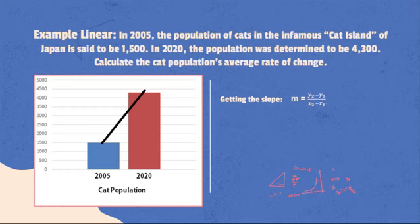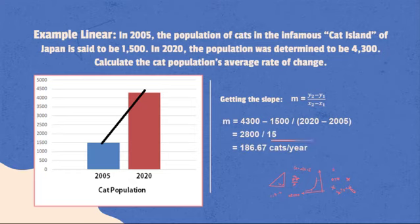Now, we just have to use the slope formula: m = (y₂ - y₁)/(x₂ - x₁). Substituting the values onto the formula, we will get the average rate of change of the cat's population as 186.67 increase per year.